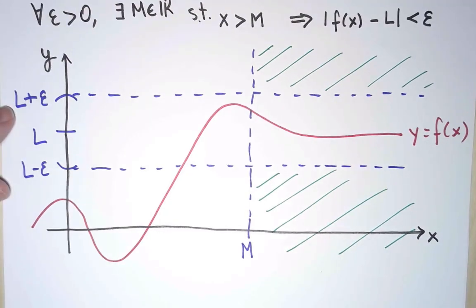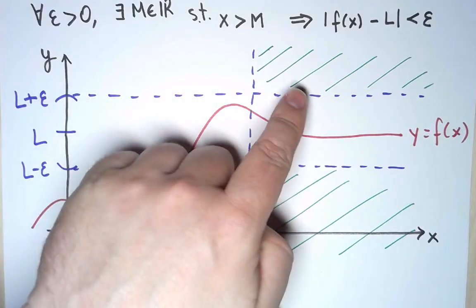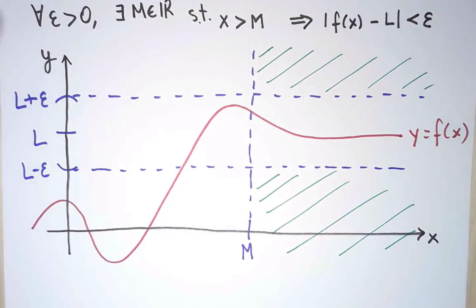But no matter what ε I choose, no matter how close I want f and L to be, I will find a cutoff M that guarantees I can do that. So there we have it. That's the definition I was looking for.